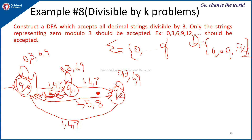For Q2, continuing: appending 2 gives 112, and checking its remainder gives 2, so inputs 2, 5, 8 from Q2 go back to Q2. This completes the required DFA for decimal strings divisible by 3.